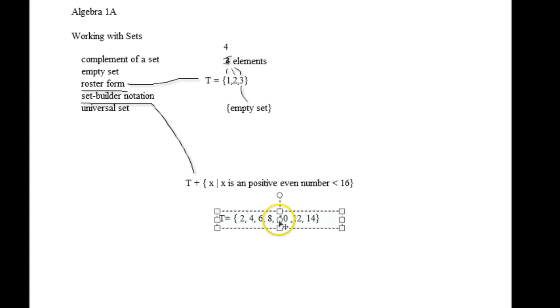Alright, and that's pretty much how you do set builder notation and roster form. So those ones are pretty easy. And then empty set, obviously, is also an element of this. If I were to go around and put it in here, there would be an empty set in there.